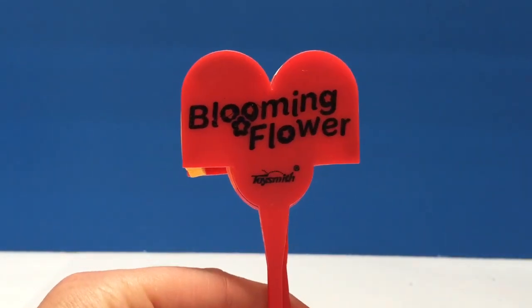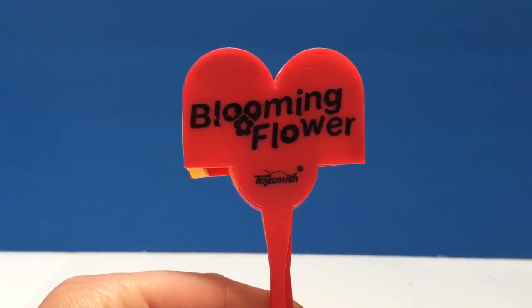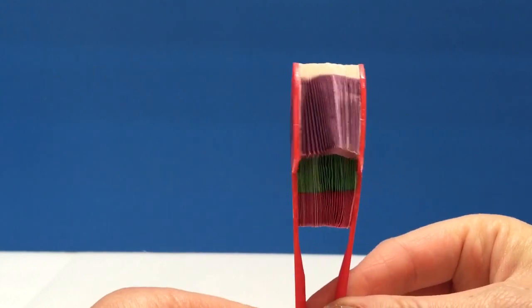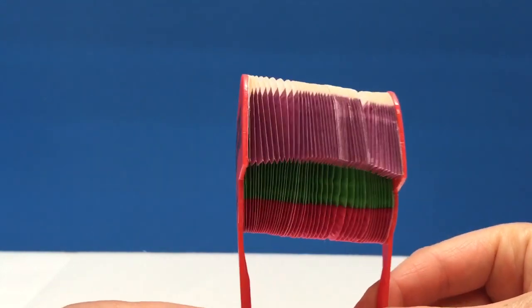Hello and welcome to Tiny Treasures. Today we're going to show you our blooming flower and it's a paper flower that's like an accordion style.